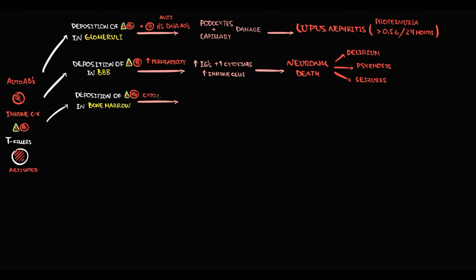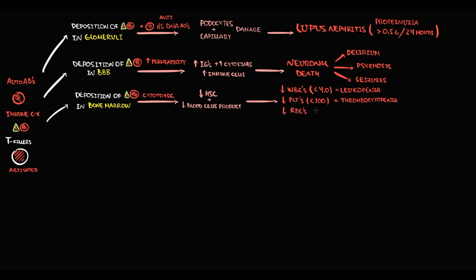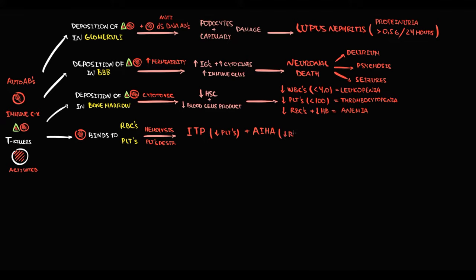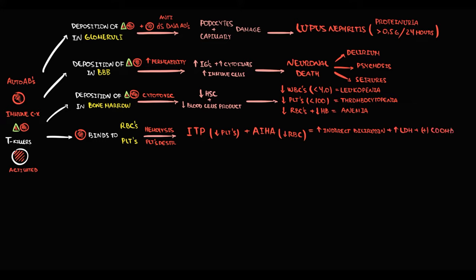Deposition of immune complexes in the bone marrow causes a cytotoxic effect on stem cells, decreasing the capacity of bone marrow to produce blood cells. This results in leukopenia, thrombocytopenia, and anemia. Additionally, autoantibodies can bind to red blood cells or platelets, provoking their destruction by splenic macrophages. In the case of platelets, immune thrombocytopenic purpura develops. In the case of red blood cells, autoimmune hemolytic anemia develops, characterized by elevated indirect bilirubin, elevated lactate dehydrogenase, and a positive Coombs test.